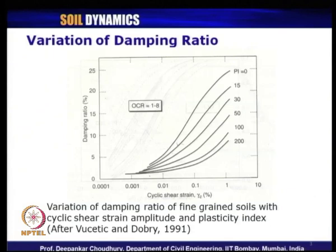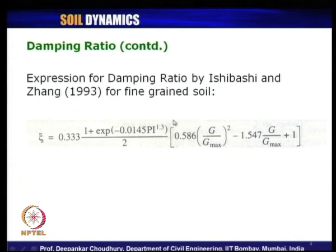Let us continue with our lecture on soil dynamics. A quick recap of what we have studied in the previous lecture: we have seen the variation of damping ratio with different values of cyclic shear strain and for different plasticity index for fine grain soil, as mentioned by Vucetic and Dobry in 1991. The empirical relation to compute the damping ratio of any fine grain soil, as proposed by Ishibashi and Zhang in 1993, is given by a specific expression.